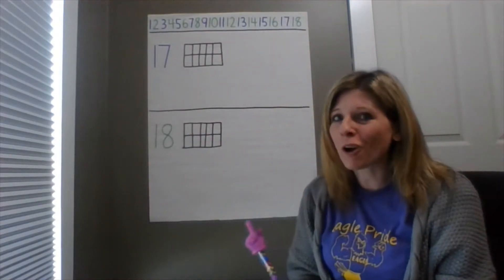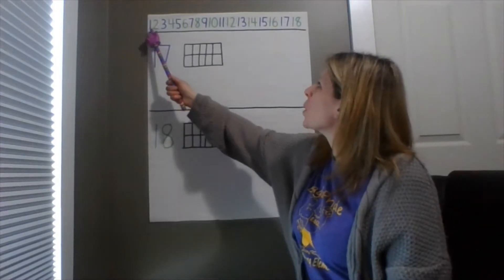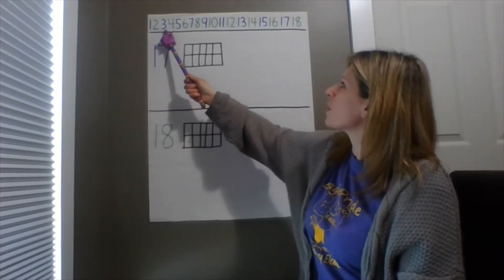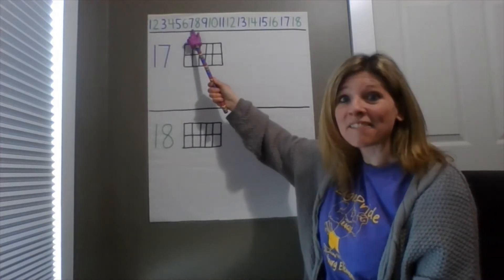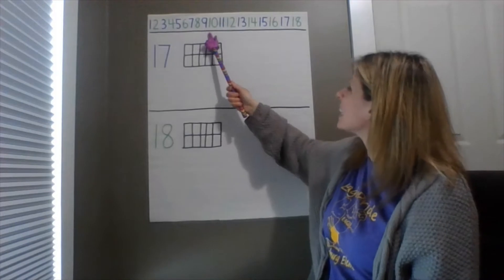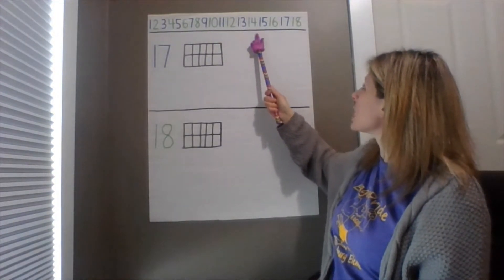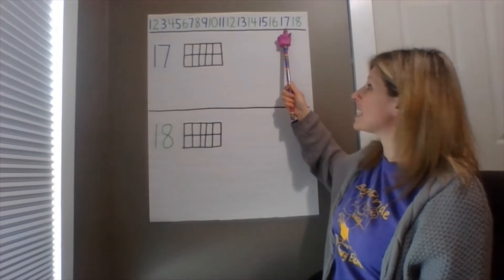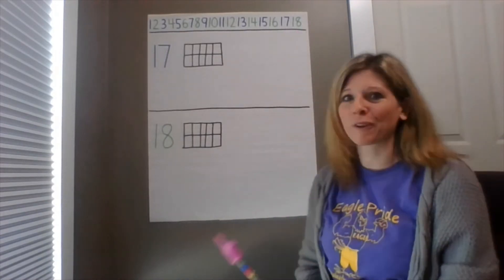Okay, so let's get started by counting up to 18. Count with me. Here we go. 1, 2, 3, 4, 5, 6, 7, 8, 9, 10, 11, 12, 13, 14, 15, 16, 17, 18. Excellent job! Thanks for counting with me.